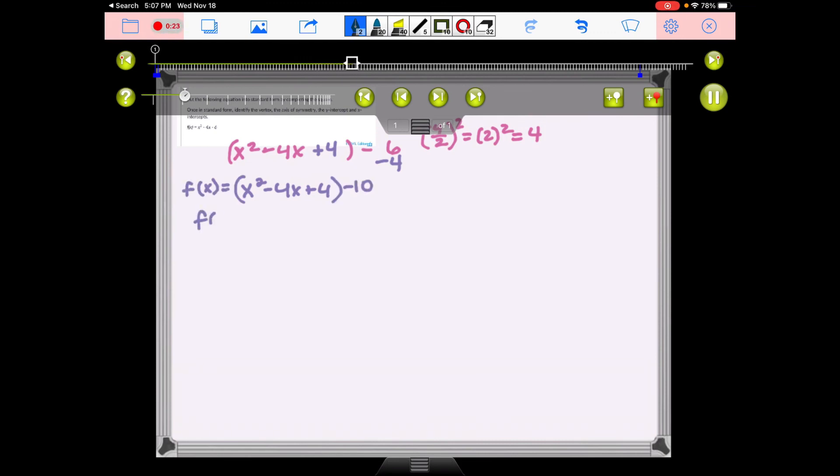There is my equation. I need to factor it. Square root of the first term, square root of the last, sign from the middle. Put it in the parentheses and square it. And there's my standard form. Identify the vertex, the axis of symmetry, the y-intercepts, and the x-intercepts. Again, you can always pause this and adjust your speed to make sure that you're going at the right speed with your voice.